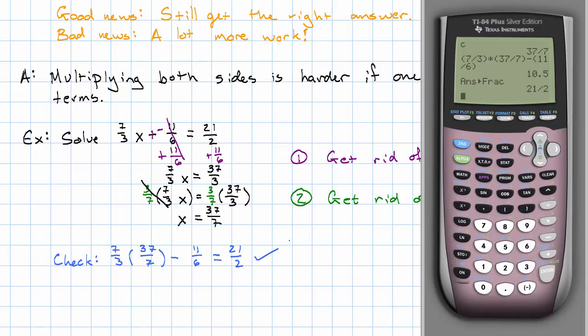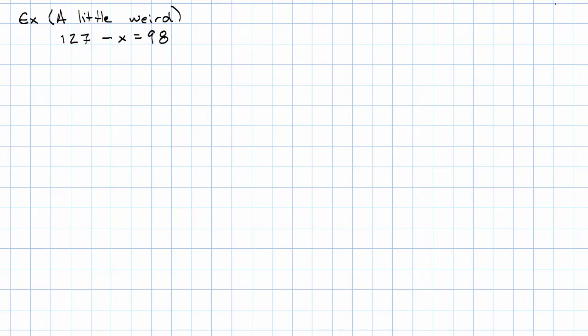Let's see an example where there's something a little bit weird. Let's say we have an equation where we're subtracting the variable. It turns out that the easiest way to handle this is to rewrite this as plus the negative. Remember, 127 minus x means 127 plus negative x. And now it's a little bit easier to see what to do. What should we do? Well, we want to get rid of the constant, which is this 127. We have a positive 127. To get rid of it, we want a negative 127.